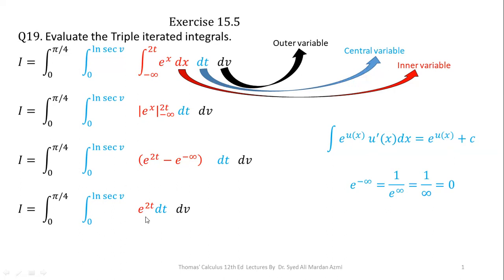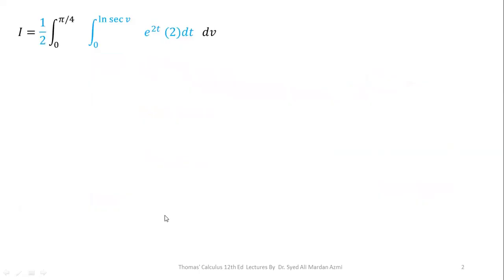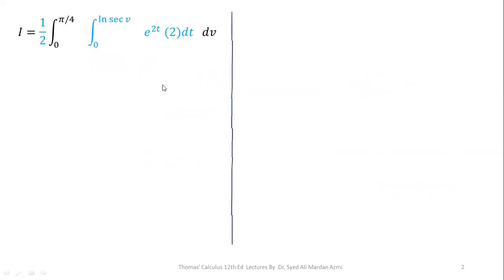In the next step, we will perform the integration of e raised to power 2t with respect to t, which is our central variable. Applying the same concept, we need the derivative of the power as a multiplier, so I have multiplied and divided by 2. Now I can perform the integration of e raised to power 2t into 2 as e raised to power 2t, for the limits 0 to natural log of sec of v.